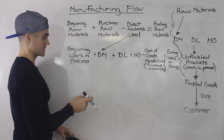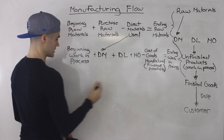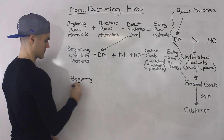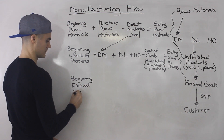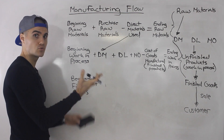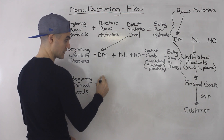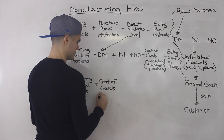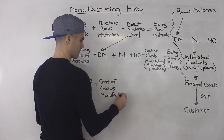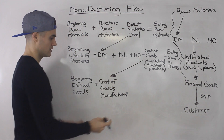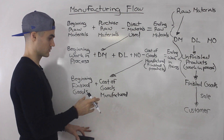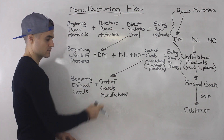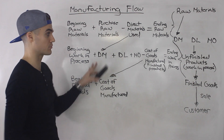Then you take those finished products and move to the finished goods flow. You're going to have some beginning finished goods already in stock. On top of those, you're going to receive some finished goods created in that period — that's the cost of goods manufactured coming in from production. So basically these are the products available for sale. You had some finished goods at the beginning, and you're adding finished goods created in the period called cost of goods manufactured coming from the production flow.